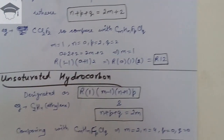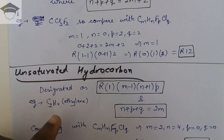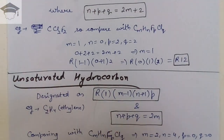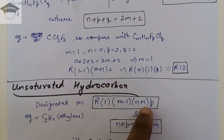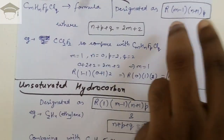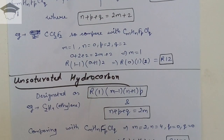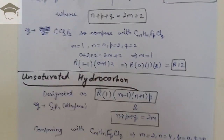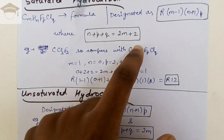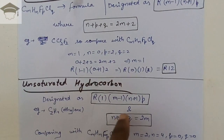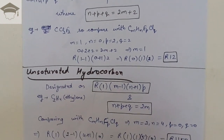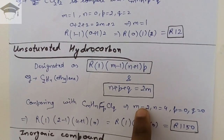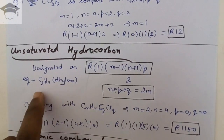Now for unsaturated hydrocarbons, take the example C2H4, which is ethylene. It is designated as R1(m−1)(n+1)(p) — after R you write an extra number 1. The saturation condition changes: for unsaturated hydrocarbons, n + p + q = 2m, instead of 2m + 2.